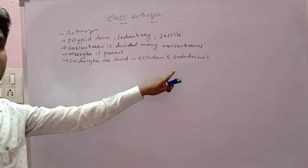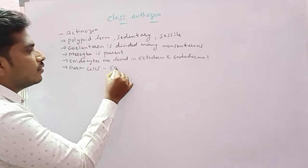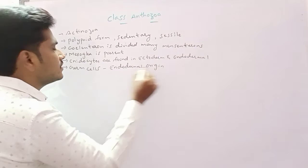Particularly the germ cells which we have. Germ cells are always endodermal in origin, the endodermal layer. What is happening here? Germ cells or reproductive cells are produced in, produced in particularly Class Anthozoa.